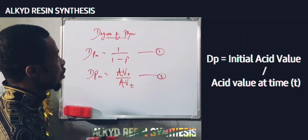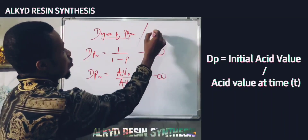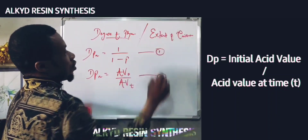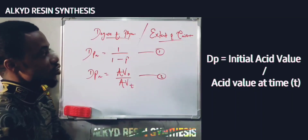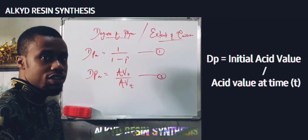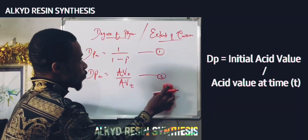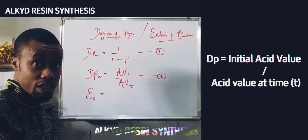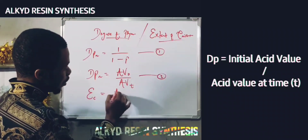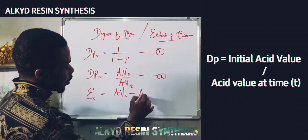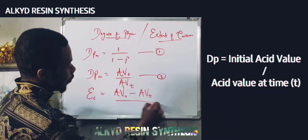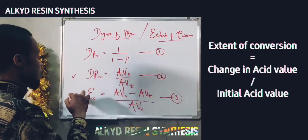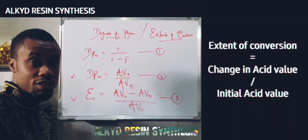The next thing we're going to learn is how to calculate the extent of conversion. The extent of conversion represents the rate at which functional groups have been converted in the process. There is another formula for extent of conversion — EC — with respect to the acid value for the alkyd resin synthesis: it is (acid value at time 0 minus acid value at time T) divided by (acid value at time 0). We know that a drop in acid value to about 10 tells us a reasonable amount of conversion.